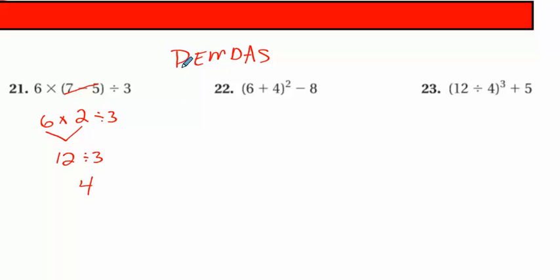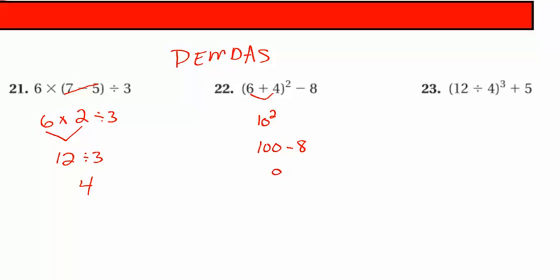Next problem. Any parentheses? Yes. Six plus four would be 10. Then do you see that exponent on the outside? So that would be 10 to the second power on the outside. Ten times ten is 100 minus eight, which gives me 92.